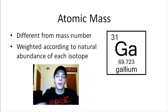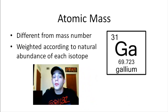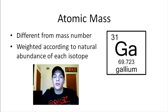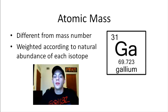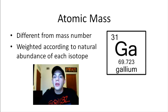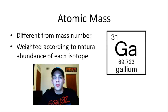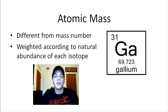Now I'd like to switch gears and talk about atomic mass, which should not be confused with mass number — they are different. The atomic mass is essentially one mass that represents all of the naturally occurring isotopes of a given element. We say the atomic mass is weighted according to the natural abundance of each isotope. So if one isotope is much more abundant than another, the atomic mass will be much closer to that more abundant isotope.